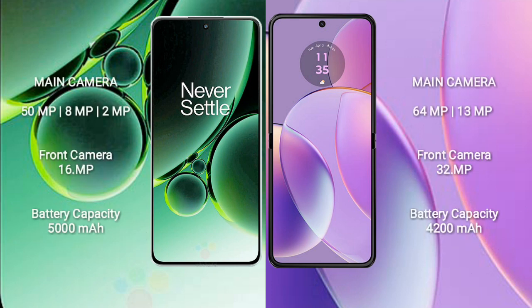OnePlus Nord 3 features a triple rear camera setup: 50MP plus 8MP plus 2MP, and a 16MP front camera. Motorola Razr 40 features a dual rear camera setup: 64MP plus 13MP, and a 32MP front camera. OnePlus Nord 3 has a 5000mAh battery with 80W fast charging, while Motorola Razr 40 has a 4200mAh battery with 30W fast charging support.